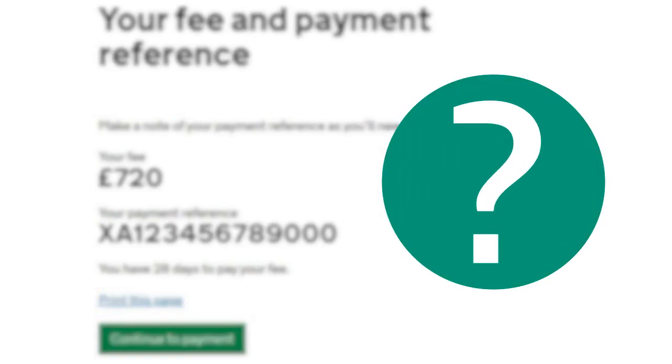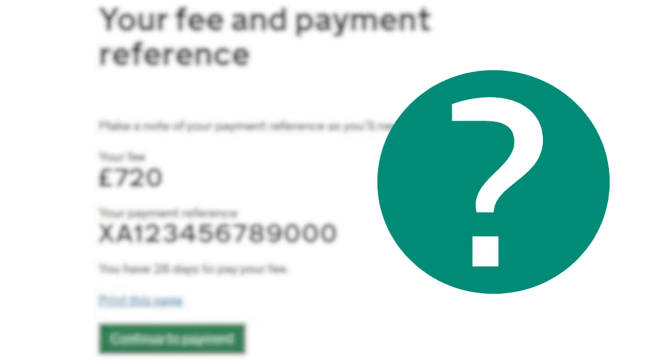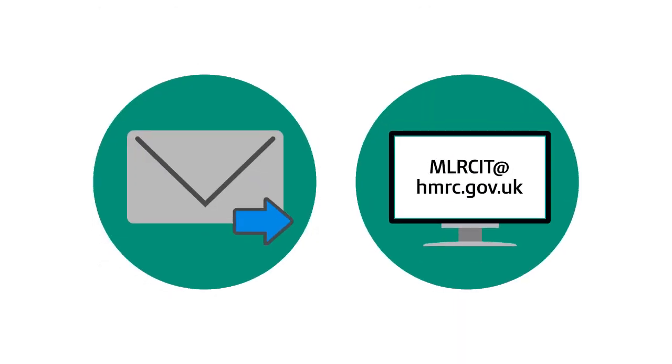If you don't have your payment reference number, you can ask for it by sending an email to mlrcit@hmrc.gov.uk.